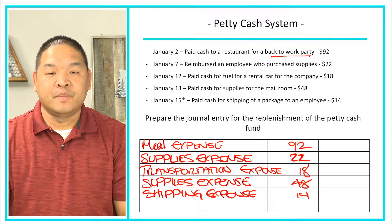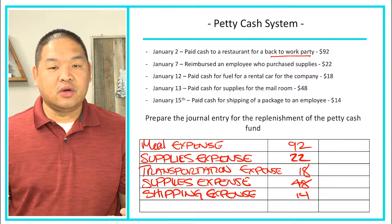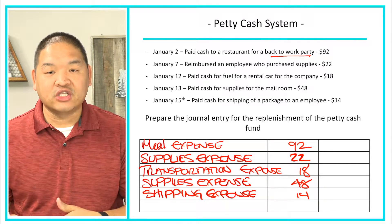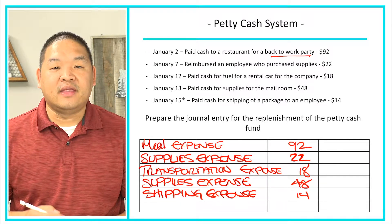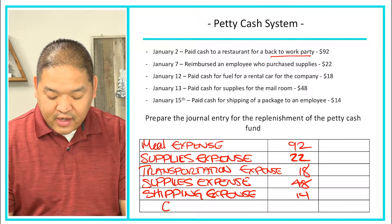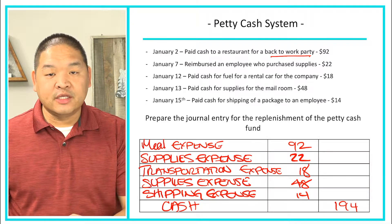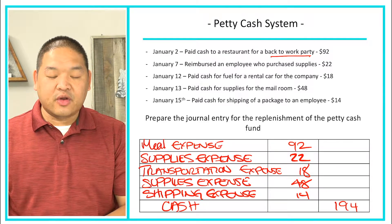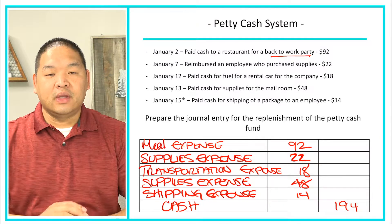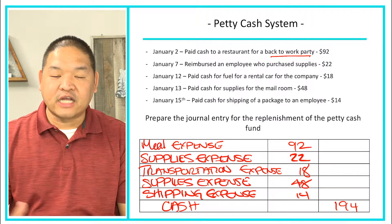That covers all of the expenses. Now we need to replenish the cash. We credit Cash for the total amount of $194, which represents the check issued to the custodian. There is an alternative two-step approach: instead of crediting Cash, you could credit Petty Cash for $194, and then when you issue the check, debit Petty Cash for $194 and credit Cash for $194.